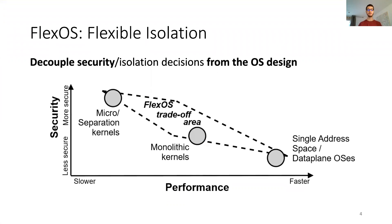In this work, we propose to take a different approach and decouple security or isolation mechanisms from the design of the OS. Clearly, the goal is to be able to achieve a range of security/performance trade-offs instead of a single point in the design space. We aim to support a range of isolation mechanisms, hardware and software, and granularities. In a sense, we want to specialize the operating system for security for given use cases.